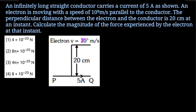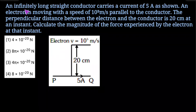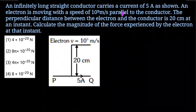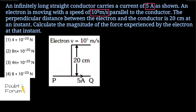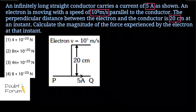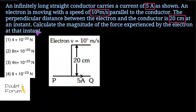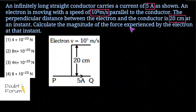Hello friends, I welcome you all to Doubt Forum. This question is: an infinitely long straight conductor carries a current of 5A as shown. An electron is moving with a speed of 10 to the power of 5 meter per second parallel to the conductor. The perpendicular distance between the electron and the conductor is 20 cm at an instant. We are asked to calculate the magnitude of the force experienced by the electron at that instant.